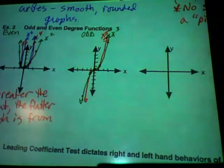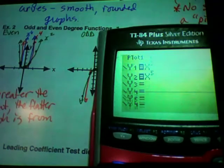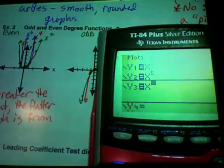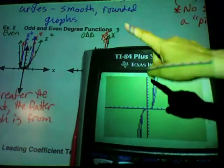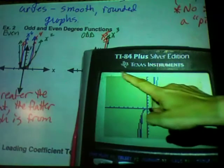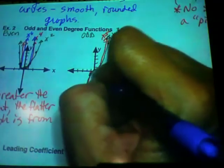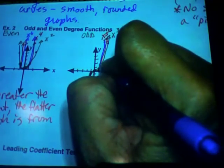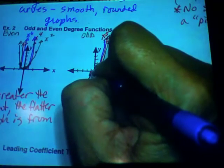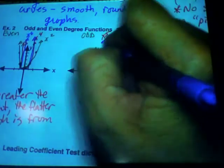And then put in x to the 7th. So now we can hardly even see the difference, right? But now it's getting really flat there. So the higher we get, the closer they're going to be to each other. But again, they're all still going to have those three points in common.